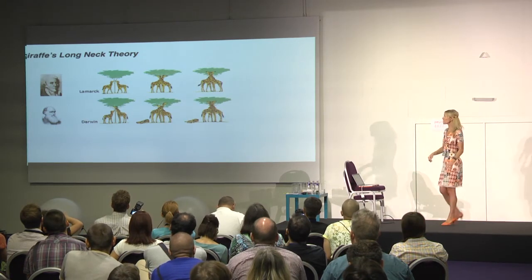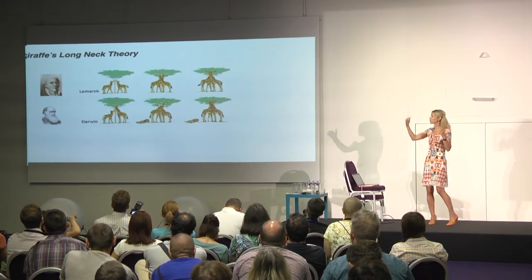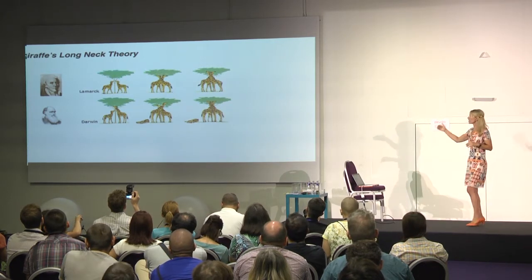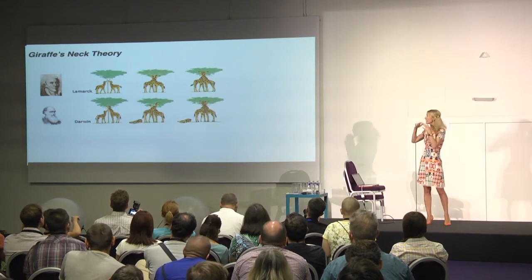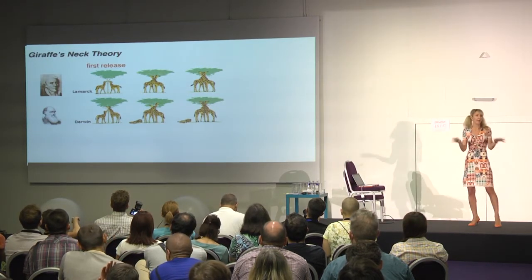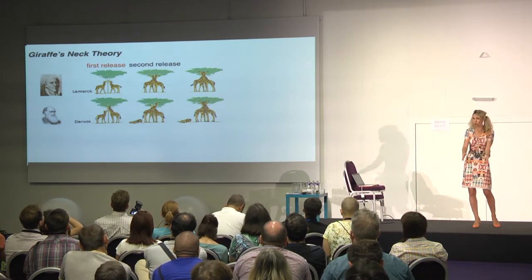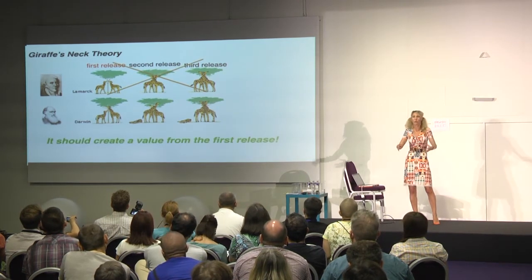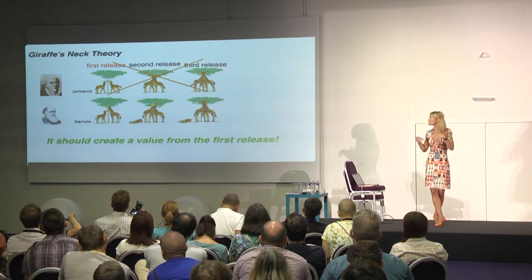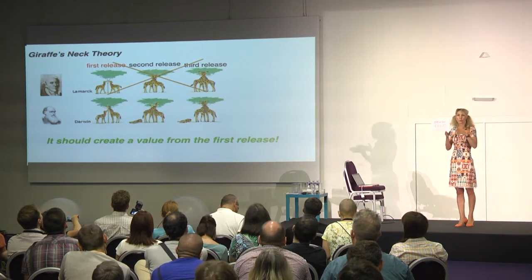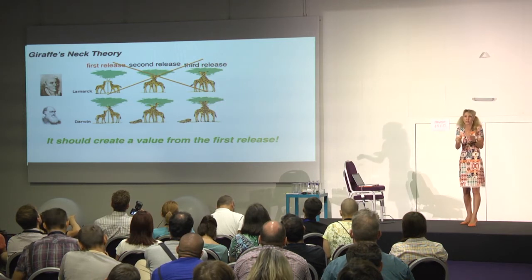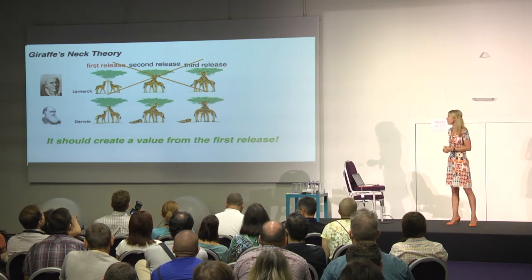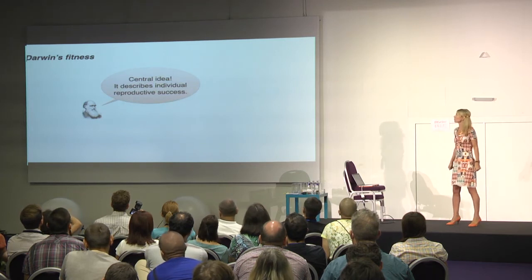Food — leaves — was up on the trees, and giraffes were stretching their necks in order to reach them. So every next generation got longer necks, and in the final version of giraffes they had long necks and could reach the trees. Darwin had a completely different approach. He said there were giraffes with short necks and giraffes with long necks. Giraffes with short necks died out because they couldn't reach their food on the trees, so only long-necked giraffes survived. We should use Darwin's approach when building our products — it should create value directly from the first release. You should not release something that is half done and wait for the third or fifth release to create value.